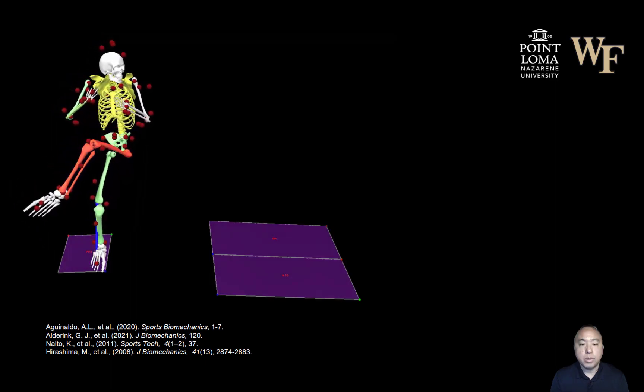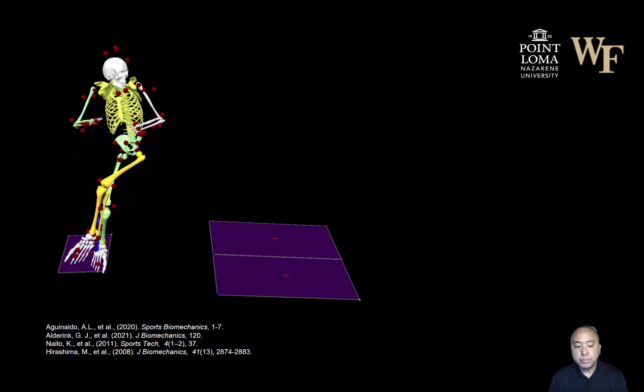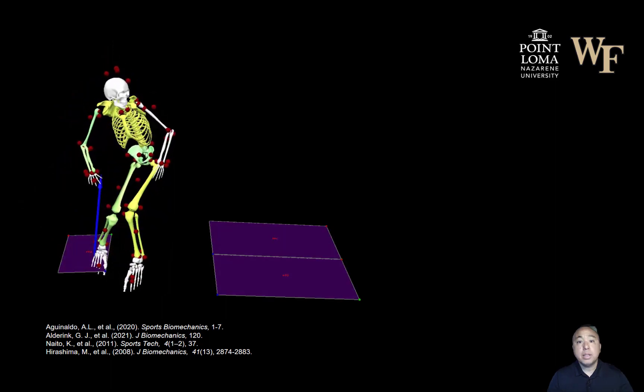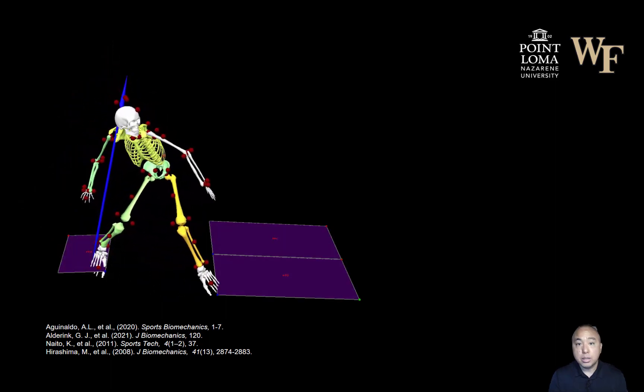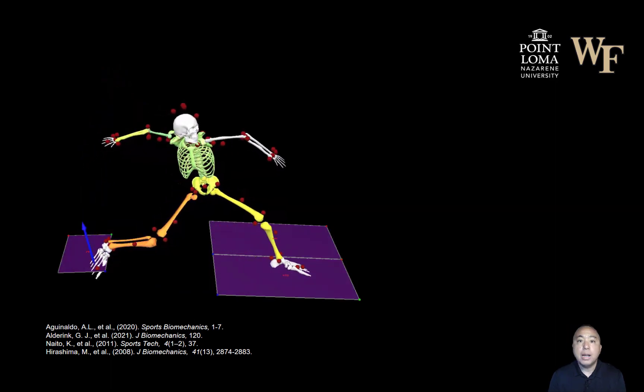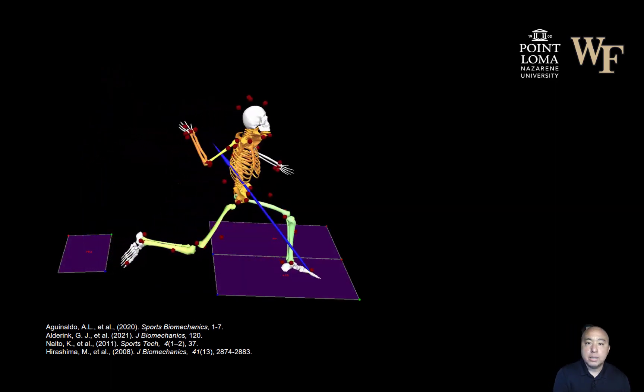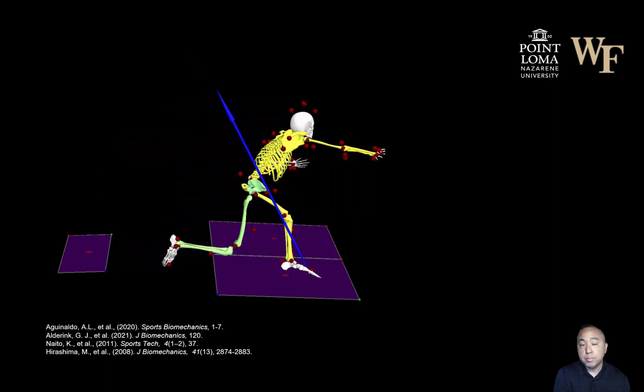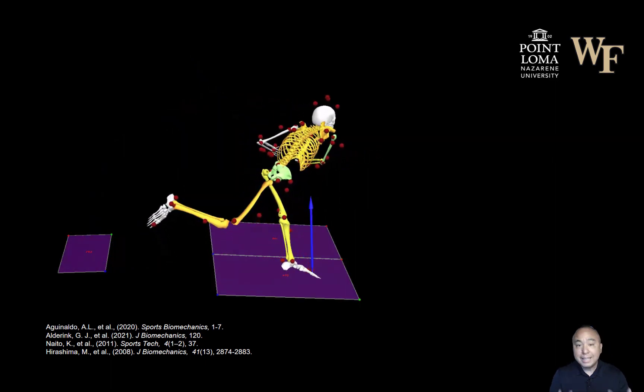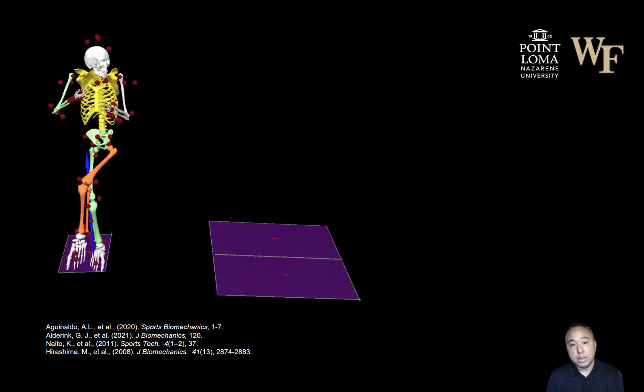So we took all the data and then input that into what's known as an induced acceleration slash power analysis, and what that allows us to do is decompose the components of segmental motion that directly contribute to the acceleration and subsequently the power generation or absorption at the throwing arm during baseball pitching.